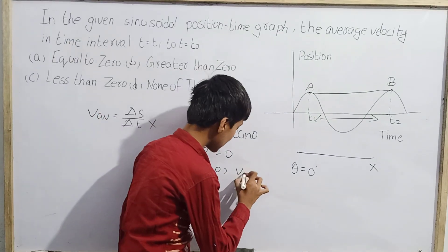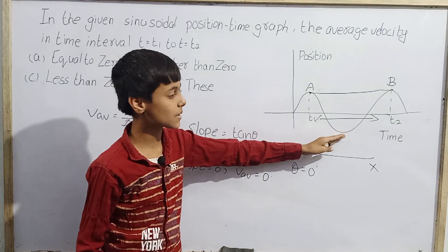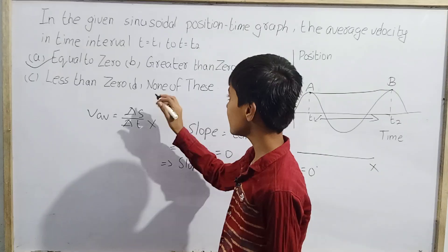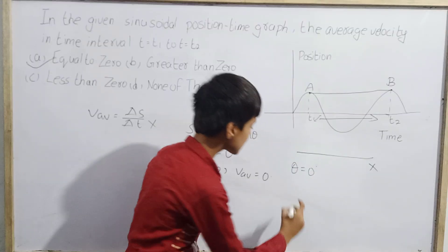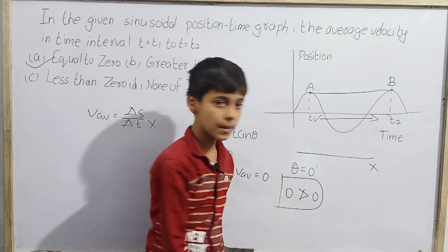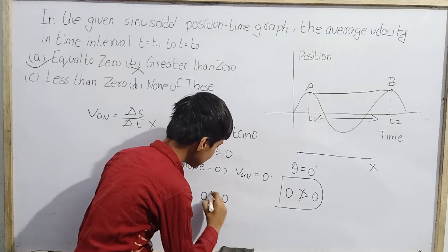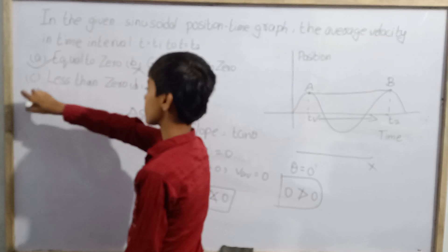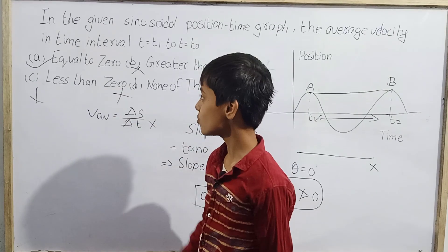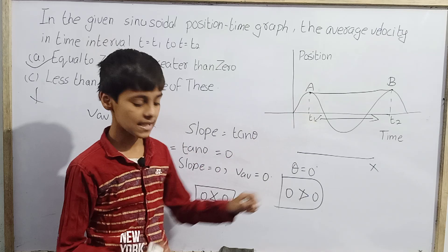Since θ = 0°, tan(0°) = 0, so the slope of the chord is zero. Therefore the average velocity from t1 to t2 is zero. Option A (equal to zero) is correct. Option B (greater than zero) is impossible, option C (less than zero) is also impossible, and option D (none of these) is also wrong.